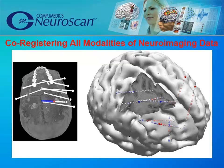The real strength of CURRY, and the features that make it unique, are the ability to combine or co-register different types of datasets. For example, CT images are good for viewing bony structures and solid objects like grid and depth electrodes, but less suited for visualizing the brain. Conversely, MRI images are suited for soft tissue, but not the bones or electrodes.